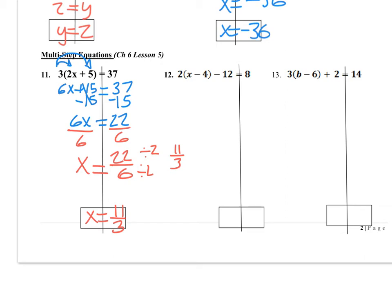Alright, number 12. Again, start by distributing. 2x, 2 times a negative 4 is negative 8, minus 12 equals 8. And then I have like terms. So I have negative 8 and negative 12. Those are going to combine. So 2x minus 20 equals 8.